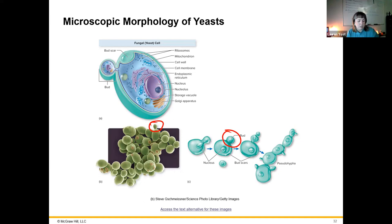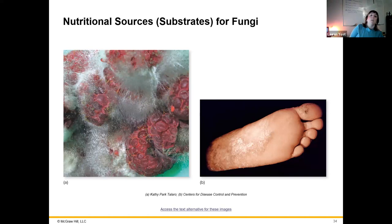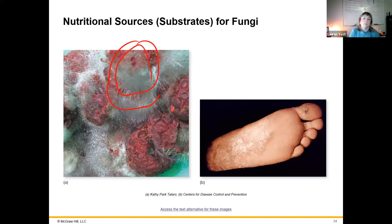Fungi consume carbon and energy sources — they are heterotrophic, meaning they require nutrients from a variety of substrates and cannot make their nutrients on their own. We also have saprobes, which are still heterotrophs but get their substrates from dead plants and animals, breaking down dead things. Then we have parasites that live off of living organisms and typically cause harm. Here we can see fungi growing on dead or dying fruit tissue, breaking it down as a source of energy, whereas the parasitic version is shown on the right — athlete's foot, for example.